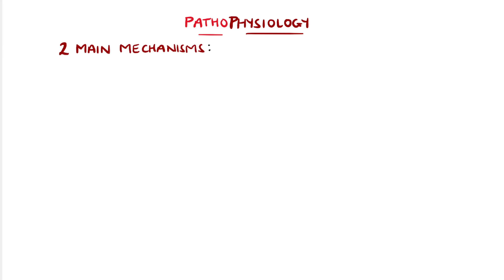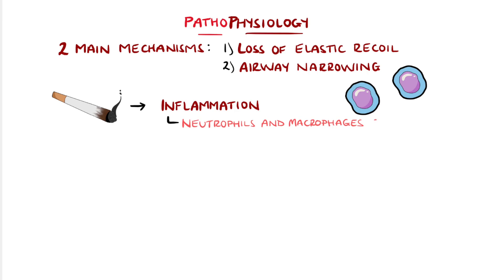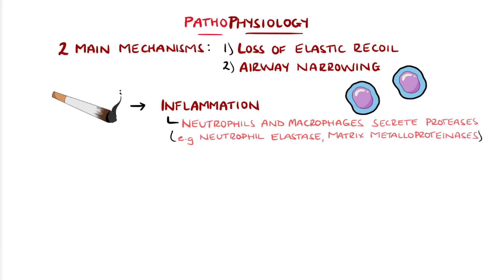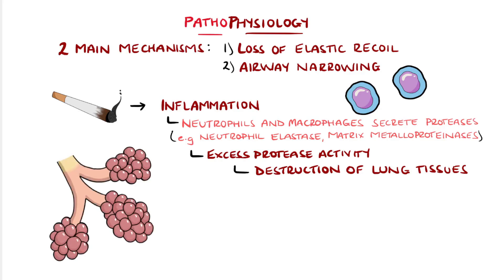In COPD, there is limitation to this airflow, which happens mostly as a result of two main mechanisms. The first is loss of elastic recoil, and the second is narrowing of the airways. A big driver for both is inflammation generated within the lungs as a result of exposure to inhaled toxins, most commonly cigarette smoking. Neutrophils and macrophages are recruited and secrete proteases like neutrophil elastase and matrix metalloproteinases, which are enzymes involved in breaking down proteins as part of normal repair. These are usually counterbalanced by antiproteases like alpha-1 antitrypsin, but as a result of chronic inflammation, there is excess protease activity, causing destruction of the lung tissue.